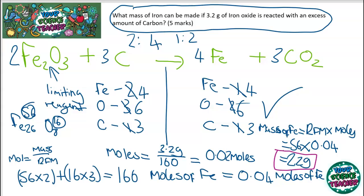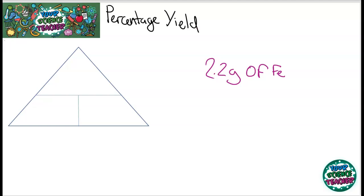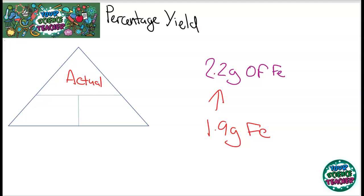On the last slide, we said that we can make 2.2 grams of iron from the reaction of iron oxide with carbon. However, it's very unlikely you would actually ever make 2.2 grams. Often you'll make less because you can never carry out a reaction to its fullest — sometimes you get transfer loss. It usually results in something like 1.9 grams of iron. To calculate the percentage yield — how much you make compared to the theoretical — you do the actual yield divided by the theoretical yield, and that gives you a percentage yield for your reaction.